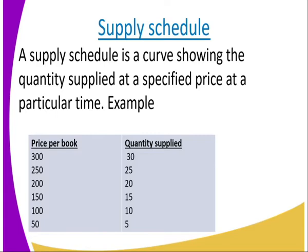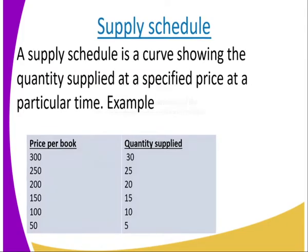If you look at that supply schedule, it is an illustration that when the prices are increasing, the quantity that is supplied also goes up. And when the prices of this book have decreased, then it means that even its supply is going down. So that is what happens when we are talking about a supply schedule.